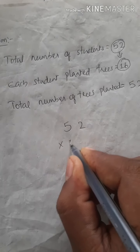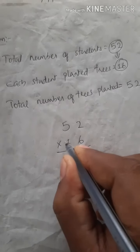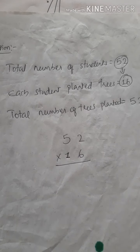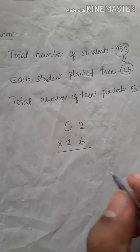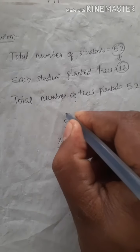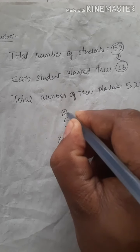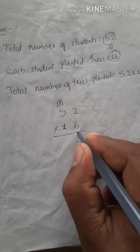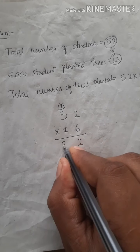Then we have to multiply this 180 by 30. Let's check: 180 into 30. Ones column first: 0 into 0 is 0, 8 into 0 is 0, 1 into 0 is 0. Then 0 into 3 is 0.